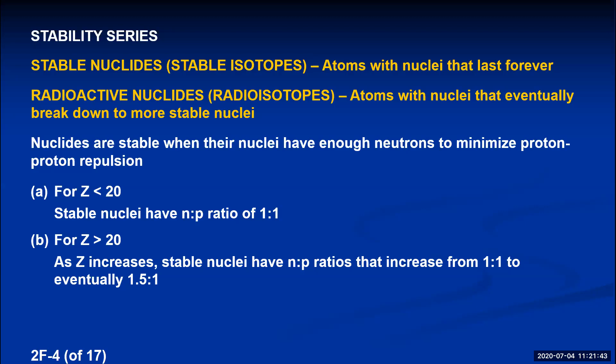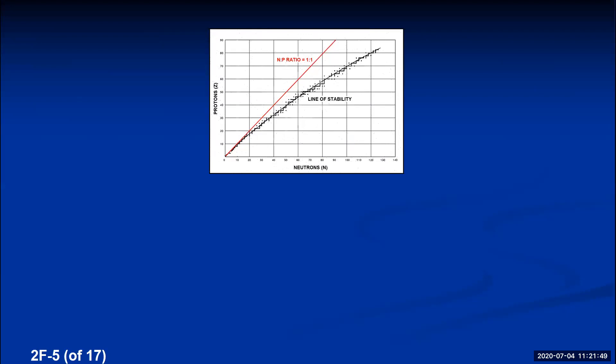If we make a graph of every single nuclide with protons on the y-axis and neutrons on the x-axis, all the stable ones — shown as black dots — follow a specific curve called the line of stability. On this graph, the red line shows where nuclei would fall if they had a 1:1 neutron-to-proton ratio.